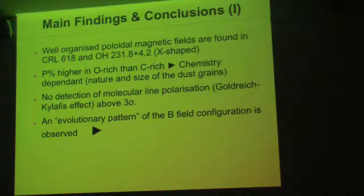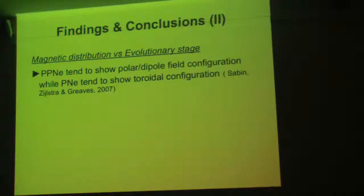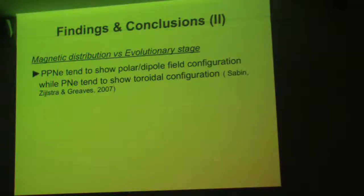Last but not least, it seems that we have an evolutionary pattern in terms of the configuration of the magnetic field. If I summarize the work that we did in 2007, where we studied CRL 2688, NGC 7027, NGC 6537, and NGC 6302 — one protoplanetary nebula and three planetary nebulae — we found that there was a change in the configuration of the magnetic field.